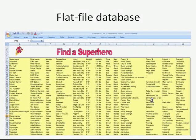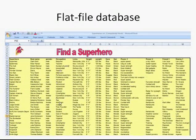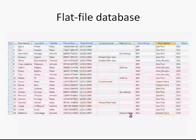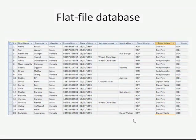To understand the relational database structure, we need to know what a flat file database is. A flat file database is where all data is stored in one table — one entity. You could store a flat file database in Excel, or in Microsoft Access, but this is where a problem called data redundancy appears.